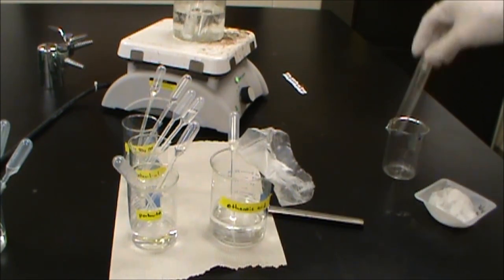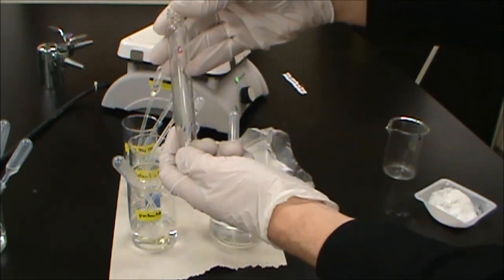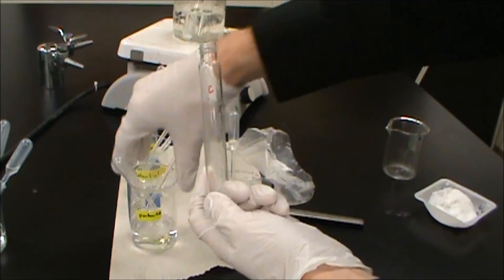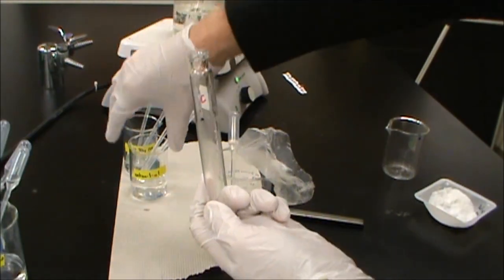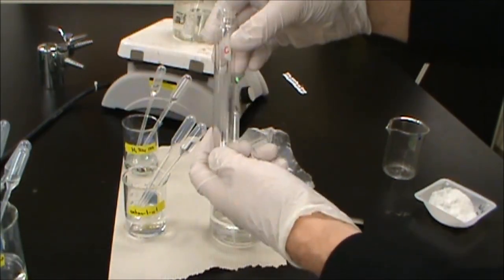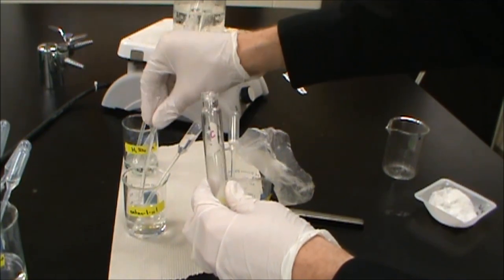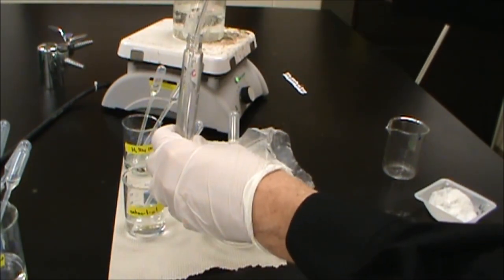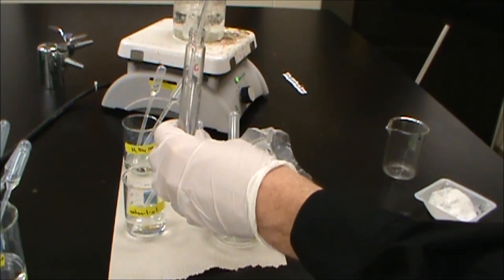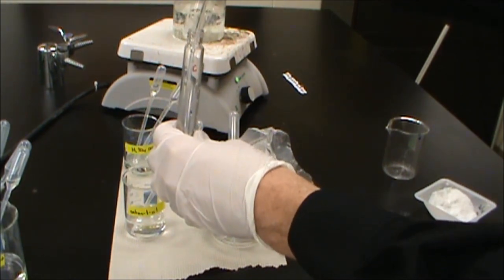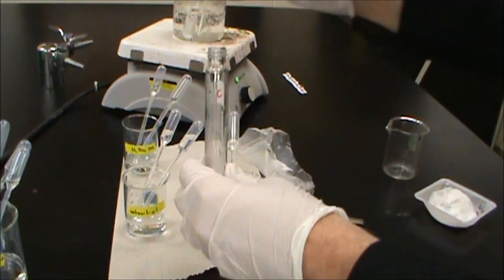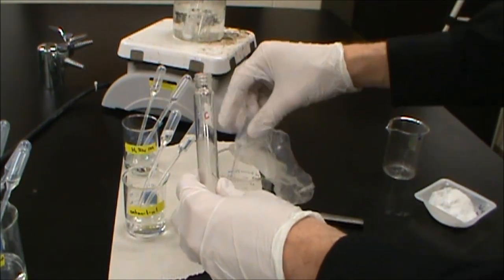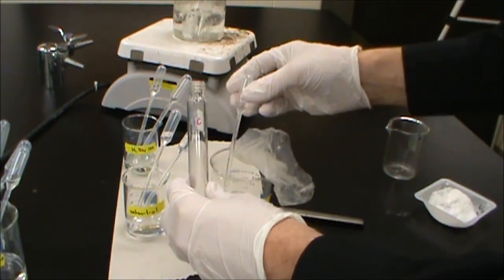And then our third one here. So we have our third test tube. And for this one, we're going to do yet another alcohol. This time we have octan-1-ol or octyl alcohol. And again, here we're going to do 20 drops. And we're going to do 20 drops of the ethanoic acid again. So we're going to use the glacial acetic acid twice here.